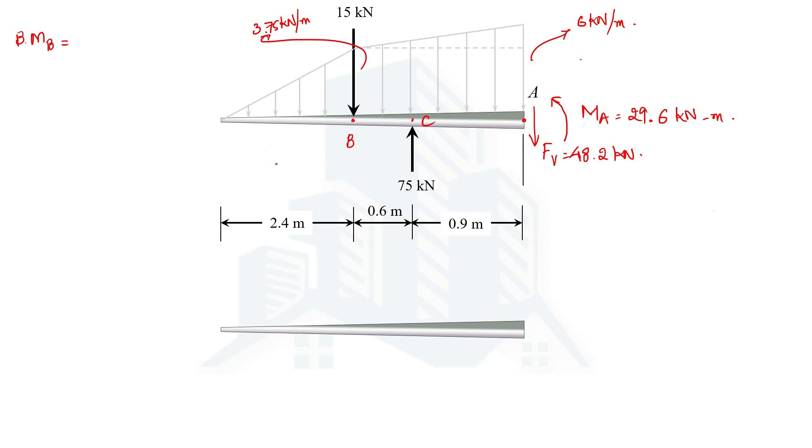On this side there is only one triangular force, so this triangular force is downward directed and it will rotate in anticlockwise direction at point B, hence I write it as negative. The force will be half multiplied by the density of the load which is 3.75 and the length which is 2.4.